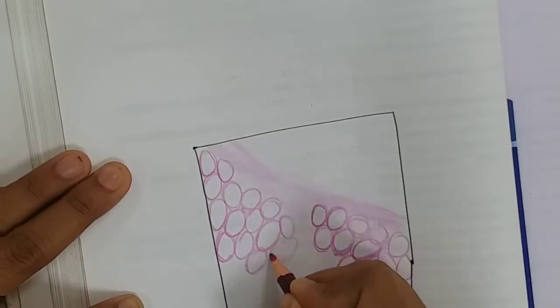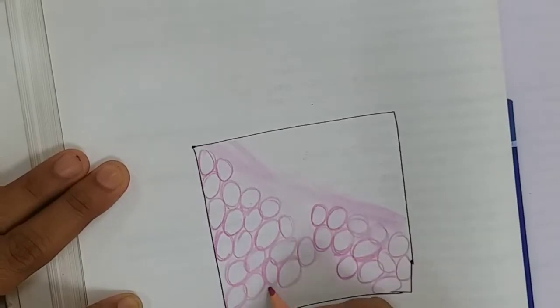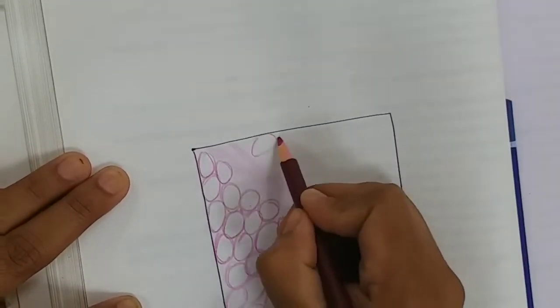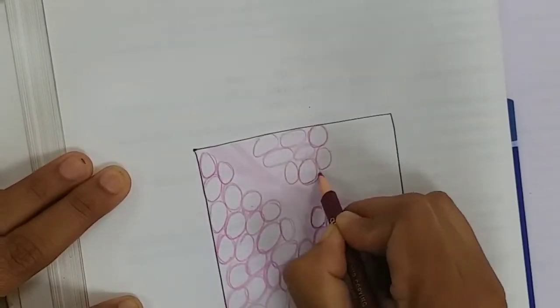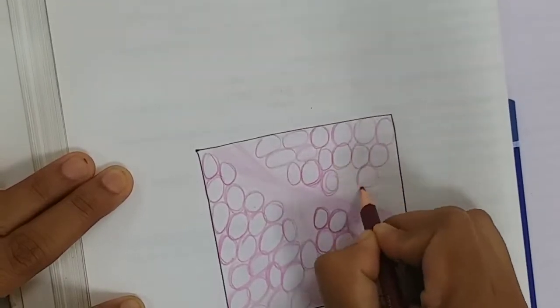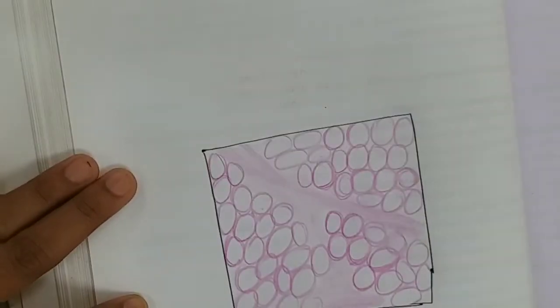There are two types of adipose tissue: brown adipose tissue and yellow adipose tissue. Brown adipose tissue is seen in the newborn. The cells are large.